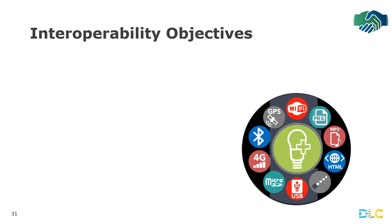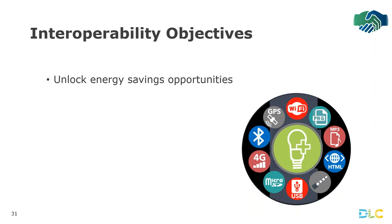Here are the objectives of pursuing interoperability. First, we want to unlock energy savings opportunities — for instance when systems are connected across building systems, such as when lighting occupancy sensors can be connected to HVAC equipment. When systems are integrated they create new opportunities. It also makes operations and maintenance much more manageable, which may mean that the energy savings that started when a network lighting control system was new can persist better because the system is operated and maintained better over time.